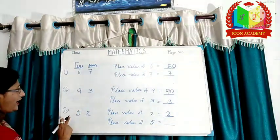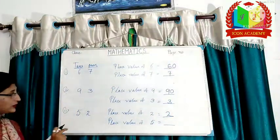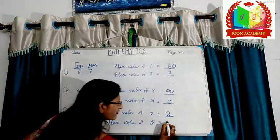And five is on tens place. So, the place value of five is fifty.